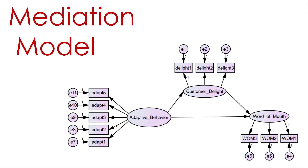Another model you can encounter is the mediation model. Say you have a predictor like adaptive behavior and you think it's going to influence word-of-mouth, but you also think it may have its influence through a third construct. In this instance, adaptive behavior goes to customer delight and then delight to word-of-mouth — so you're assessing whether customer delight mediates adaptive behavior's effect on word-of-mouth, following that indirect path. You assess the indirect effect and also the direct effect to see if both are significant.